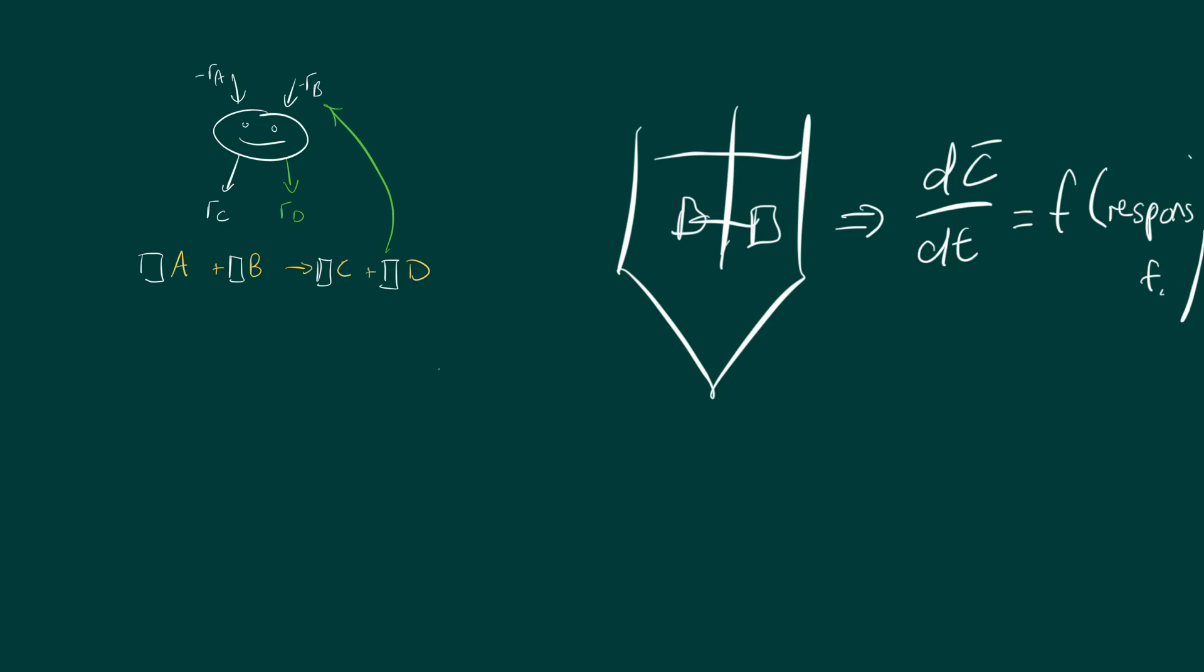The response generated by the microbe will be a function of how things change in the fermenter. This is very useful because we start generating those graphs that describe the fermenter behavior, and these are really, for the bioprocess engineer, the holy grail.